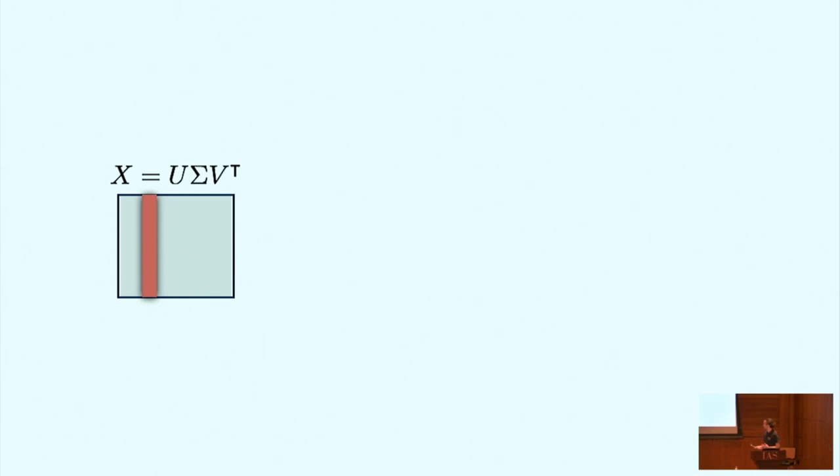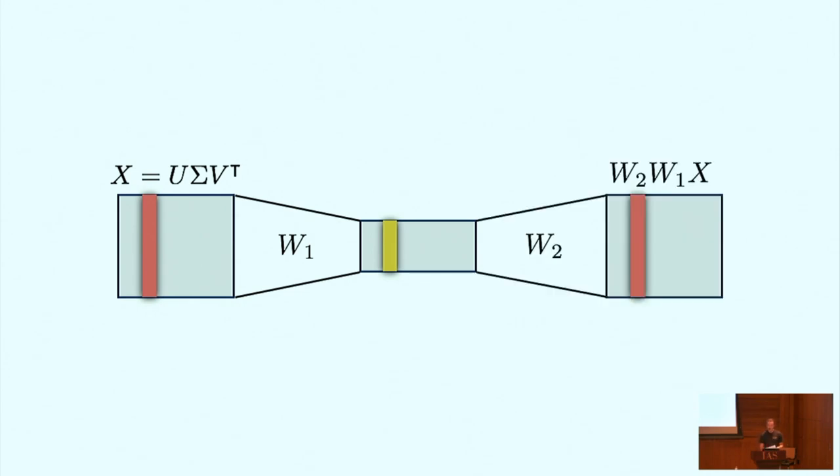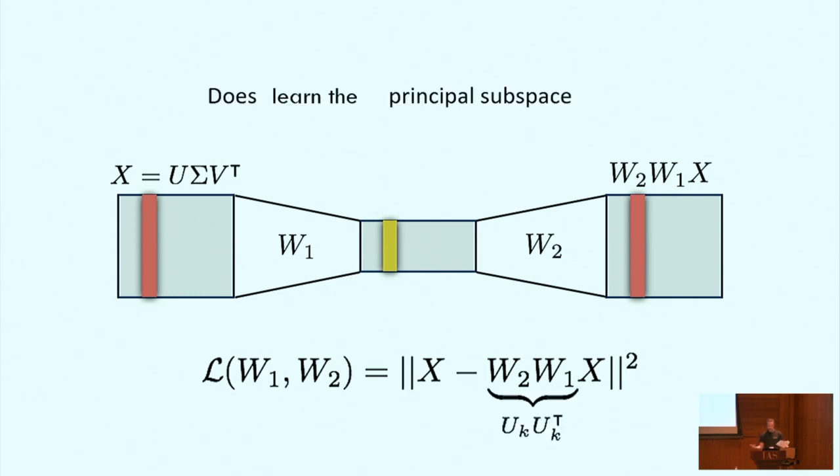So for this talk, we'll be considering a data matrix X with positive and distinct singular values, a linear encoder W1, which maps data in Rm to a representation in Rk, and a linear decoder W2, which takes that representation in Rk and maps it to a reconstruction in Rm, and the loss we'll be considering is the squared Euclidean distance between X and its reconstruction.